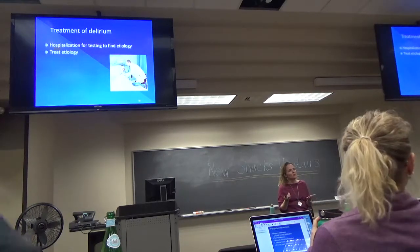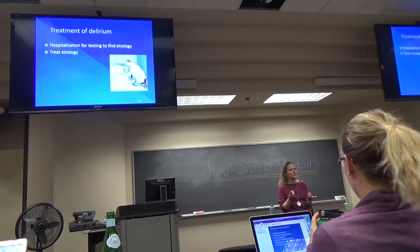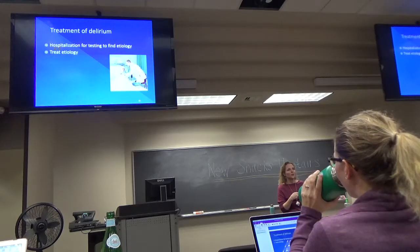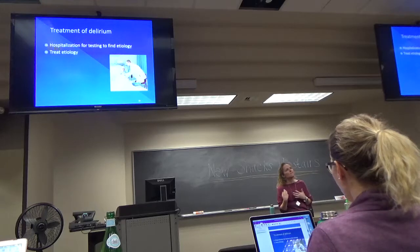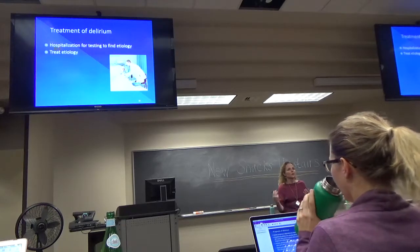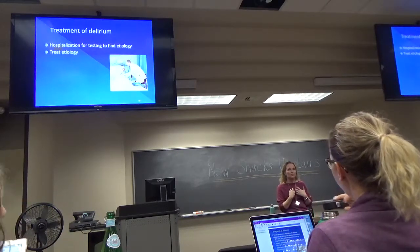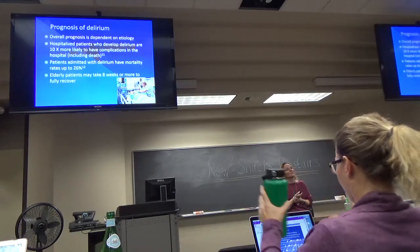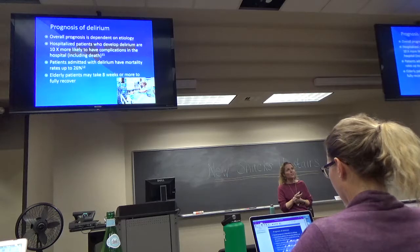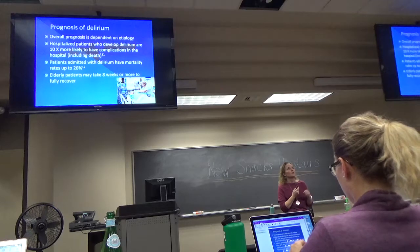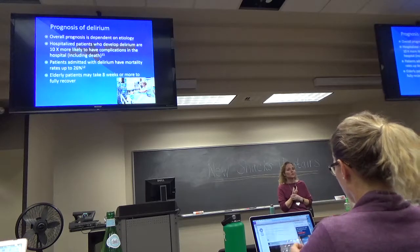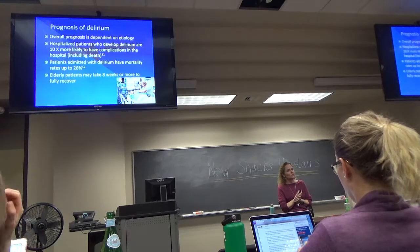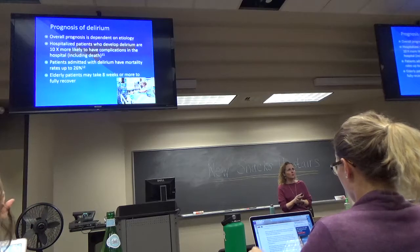The treatment for delirium is going to be finding the cause and treating the cause. In my setting, a lot of times it's as simple as figuring out what's going on — maybe they'll be coughing, or the caretaker will come in and say they've been coughing, or maybe their pulse ox is low. The prognosis is not so good. If they're hospitalized and develop delirium, they're ten times more likely to have complications, including death. If admitted with delirium, their mortality goes up to 26% — one in four die. Elderly patients take eight weeks or more to recover. Delirium is not a good thing for older patients especially.